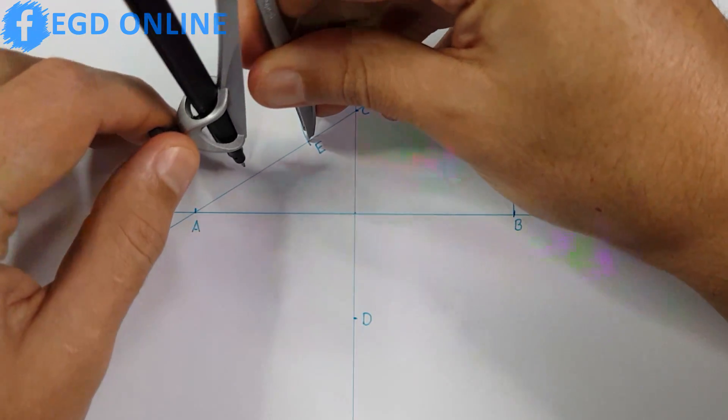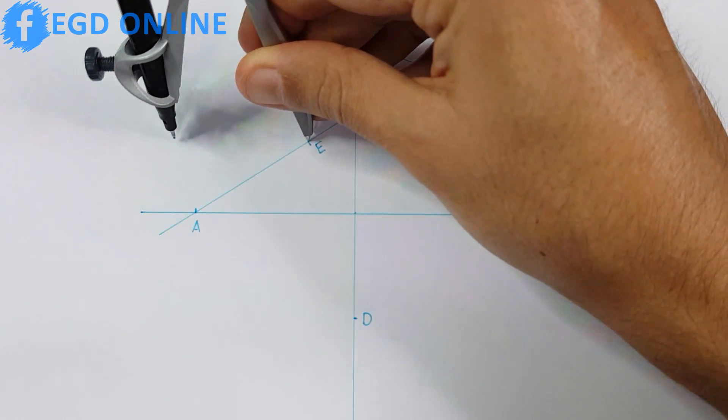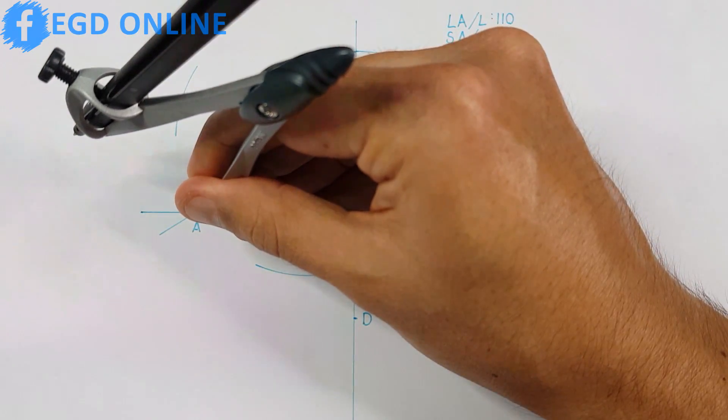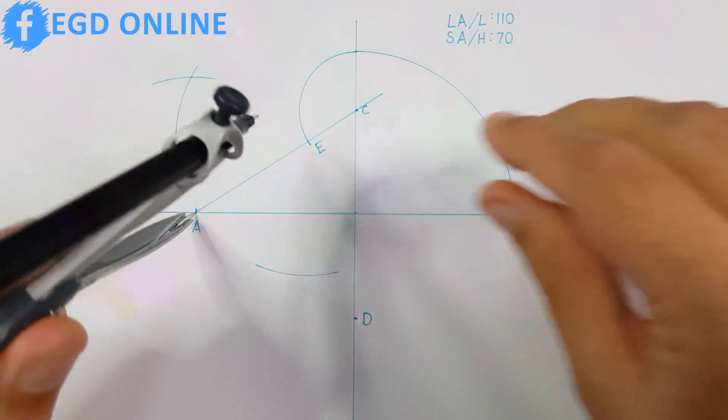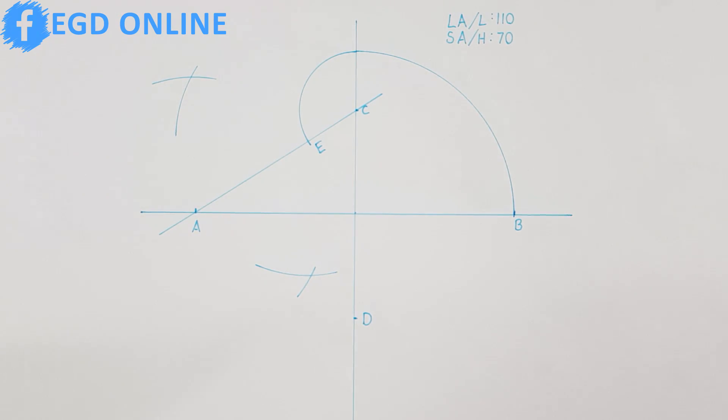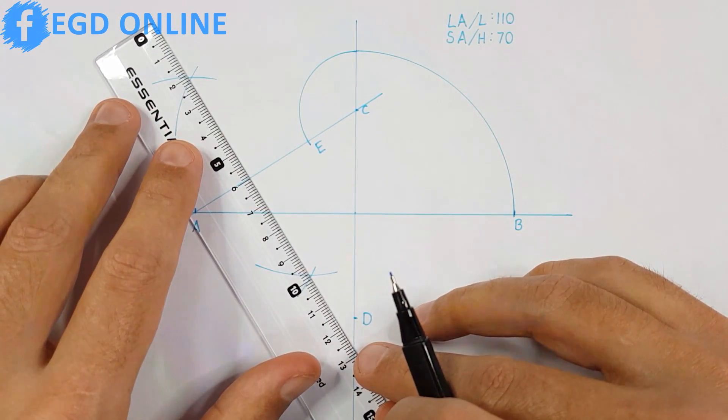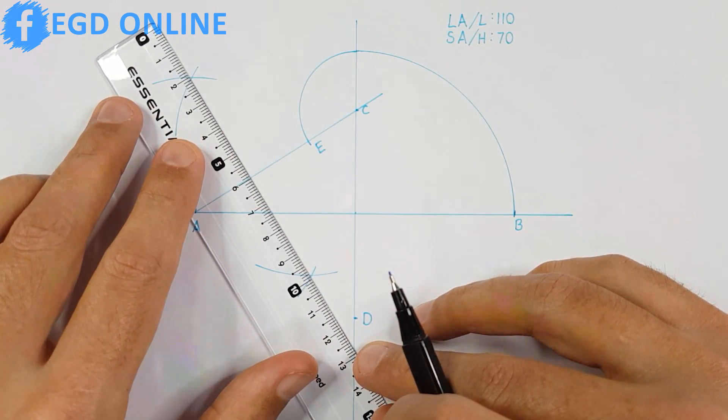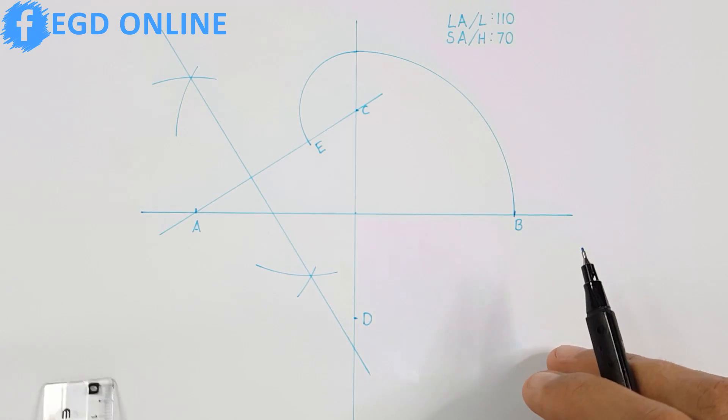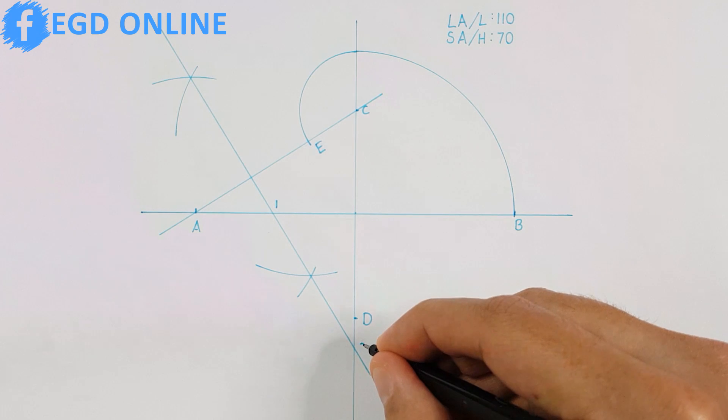Next take your compass and apply the middle point method on line A-E. When drawing your middle point line make sure to draw it long enough so that it sections your major axis and your minor axis. Label these two sectioning points as 1 and 2.